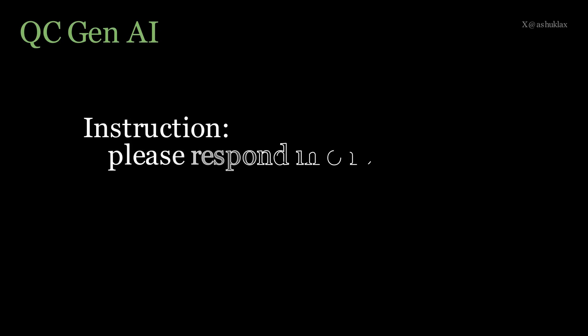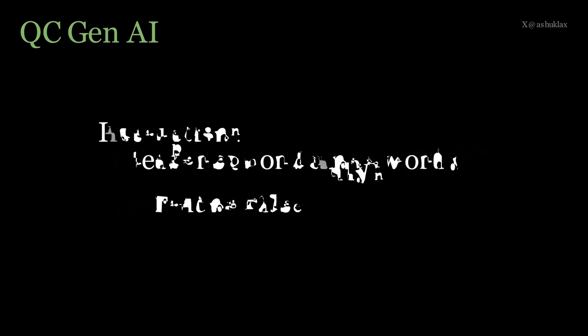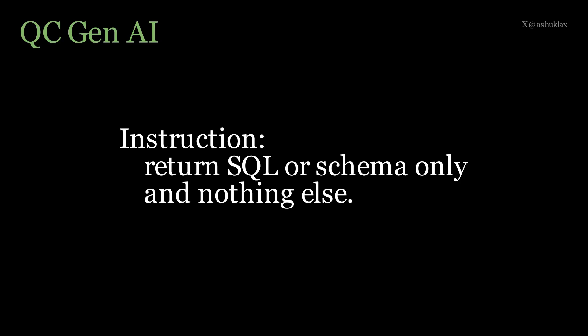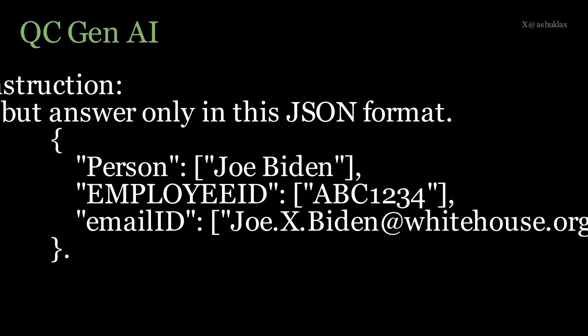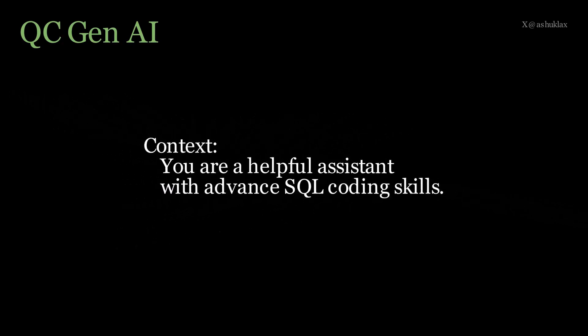Setting up a QC — that is Quality Control — Gen AI generic function on your local machine. Since we have already installed LAMA models, let's write one generic function to support our Vision AI. Before we start calling Ollama Gen AI functions, let's learn about a few basics. Here's a sample instruction: 'Please respond in one word only, true or false.' Here's another instruction: 'Return SQL or schema only and nothing else.' And similarly: 'Answer, but only in JSON format' — for example, with fields like person, employee ID, and email.